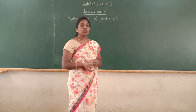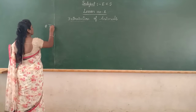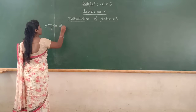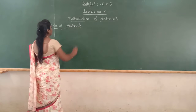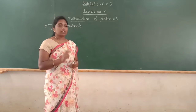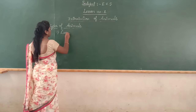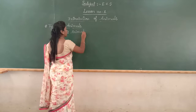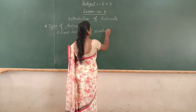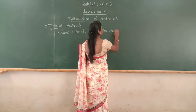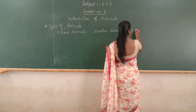Today, let us go to types of animals. Types of animals. Mainly, we divide animals into three groups: land animals, water animals, and the third one is air animals or flying animals.